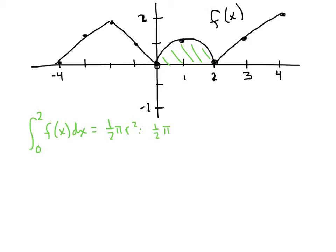For the integral from negative 2 to 0 of f(x): starting at negative 2 and going to 0, it's just a triangle. One-half base times height — we've got a base of 2, a height of 2, so we've got a nice answer of 2.